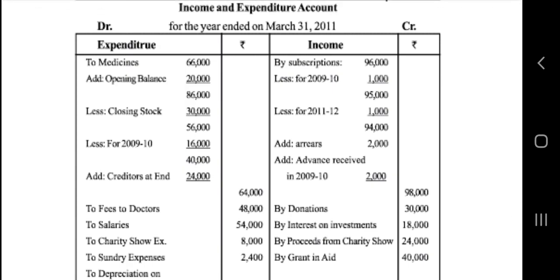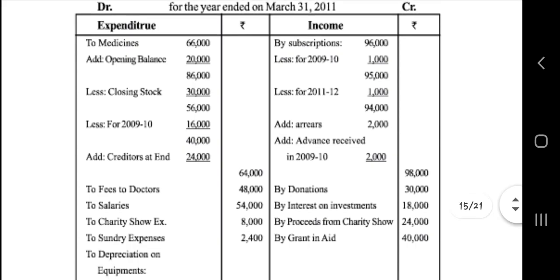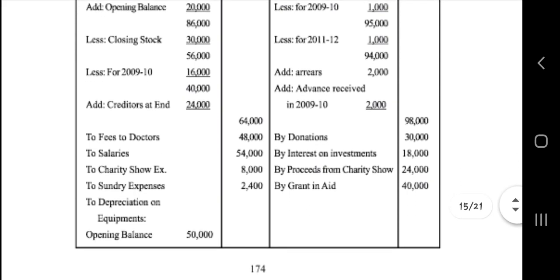So medicines is 66,600, opening balance 20,000, giving 86,000 totally. Next, less is 30,000, so 86,000 minus 30,000 gives 56,000. Next, less 60,000, so total is 40,000. Add credit is 44,000, so total is 64,000. Here is the total amount.